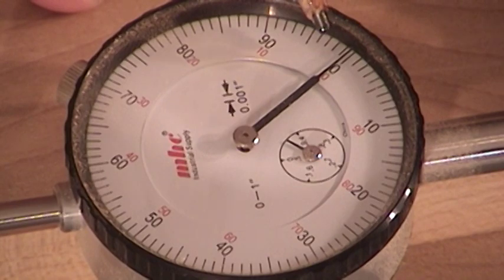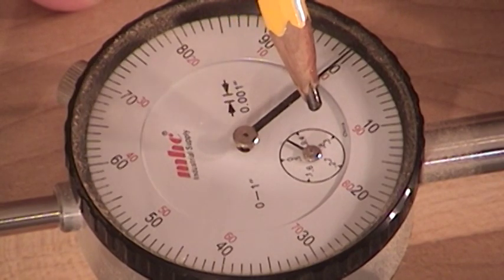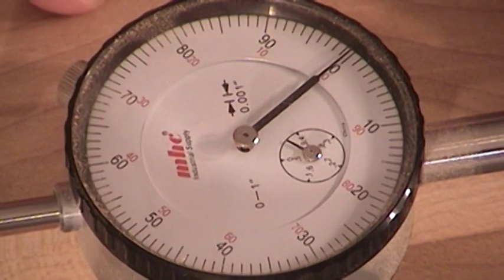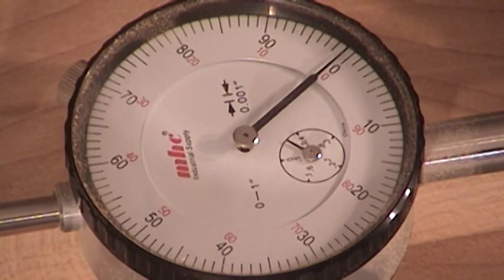So once the dial indicator face reads zero and the secondary dial is the same as before, I know I've returned the table saw blade to the exact same bevel angle that we had earlier.